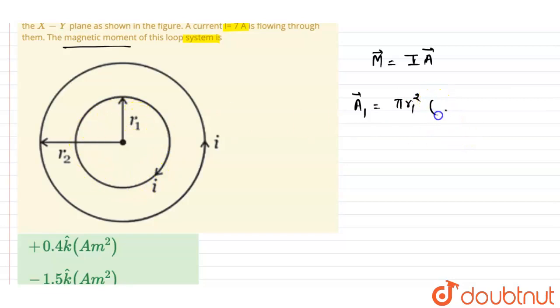You can use the right hand thumb rule and you will get the area vector as in the minus k-hat direction. Similarly, we can find the area vector for the second loop, which is π r2 squared, and the current is in the anticlockwise direction, so the direction is k-hat, which is positive.